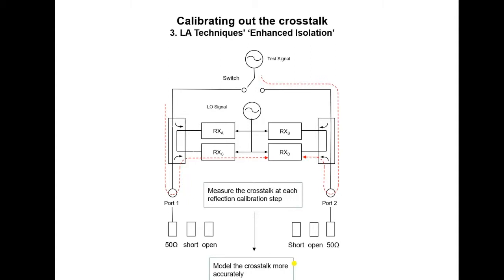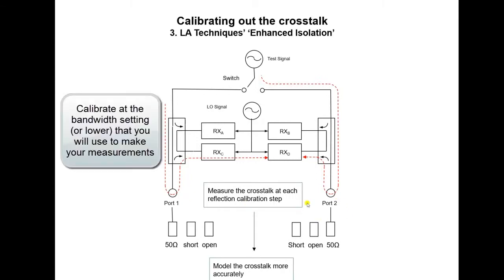Now, it is important to remember that for this technique to work well, as indeed any other crosstalk calibration technique, you need to make sure you make the calibration measurements at the bandwidth at which you will make your DUT measurements, or even lower. For example, if you wish to make measurements at 100Hz, then you should make your calibration measurements at 100Hz, or even 10Hz. The enhanced isolation calibration technique can work well, but the cost is that you need to make four slow calibration measurements.